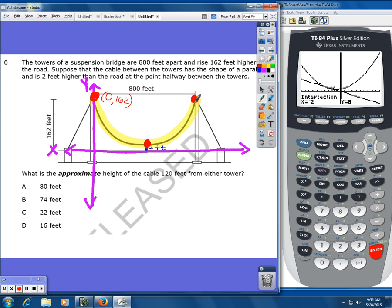For this point over here, I know that on the X axis, I've gone 800 feet because that's the distance from one tower to the next. My Y value, my height is still 162.